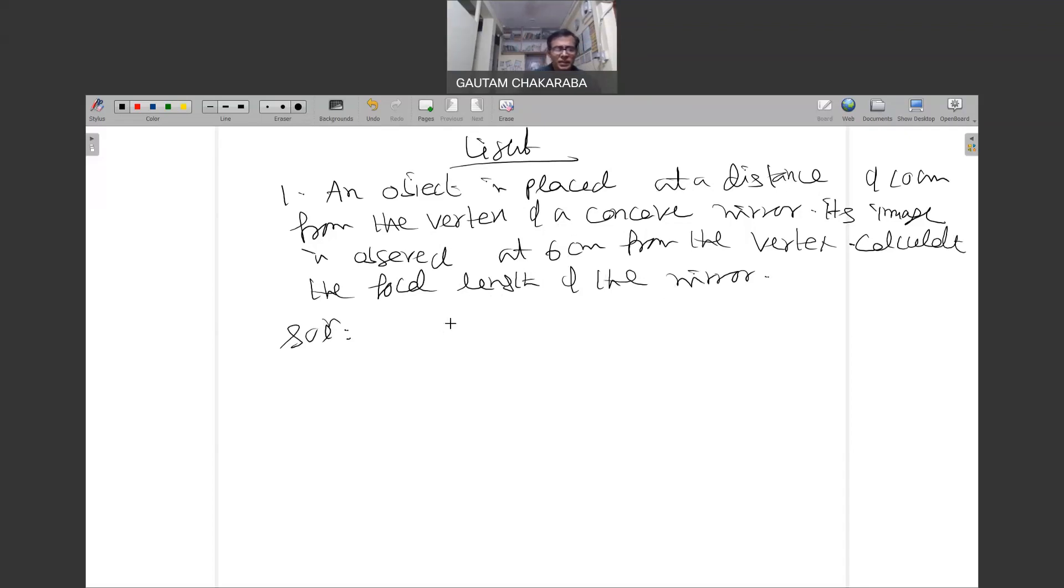An object is placed at a distance of 10 centimeter object distance from the vertex of a convex mirror. Its image is observed at 6 centimeters from the vertex. An object is placed at a distance of 10 centimeter from the vertex of a concave mirror. Its image is observed 6 centimeter from the vertex.